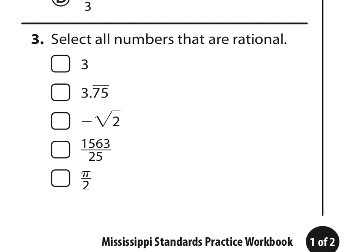Okay, so we're going to look at this problem number three. We're going to select all numbers that are rational. They can be written as a fraction, as in a ratio. So the first one is 3. We could write it as 3 over 1. So yes, that one is rational. This next one, 3.75 repeating, it is a repeating decimal. So it can be written as a fraction.